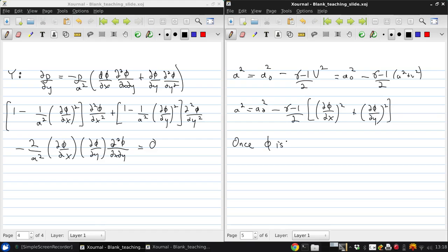Once phi is known, then u is just u to the x, v is just u to the y, we can use this expression to get the speed of sound a, we can write the Mach number as just a square root of u squared plus v squared over a, and we can use the isentropic relations to get the pressure, temperature, and density